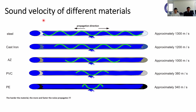You can see here the different sound velocities for different pipe materials. The best material is steel or stainless steel, where the signal propagates very quickly and therefore travels a very long distance — you can hear leaks even at one to one-and-a-half kilometer distance. The worst material is polyethylene. PE material is very soft, and you can generally say the harder the material, the more and faster the noise propagates.